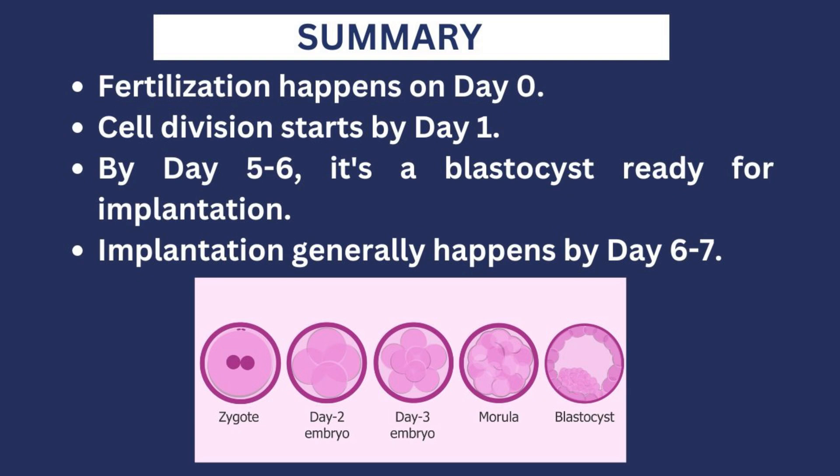Let's take the process again. Day zero: sperm and egg come together, all their genetic material is fused to form a zygote with a total of 46 chromosomes. Day one: the zygote splits into two cells. By day three it has split into eight cells, and by the end of day four it has split into 16 cells known as the morula. It continues to divide up to day six to form a blastocyst — a hollow ball with two layers. The inner layer forms the embryo and the outer layer forms the placenta. By the end of day seven, the blastocyst is implanted in the wall of the uterus and the embryo starts getting its nutrients from the mother.